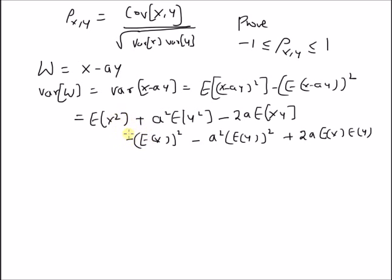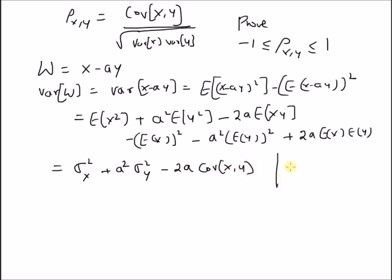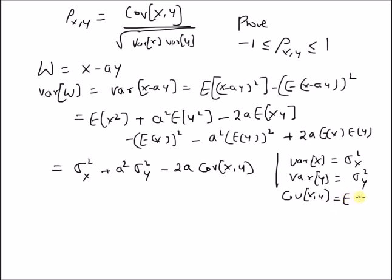Using standard notation for variance and mean, we can rewrite this: the variance of w equals sigma squared x plus a squared times sigma squared y minus two a times covariance of x and y, where variance of x equals sigma squared x, variance of y equals sigma squared y, and covariance is defined as expectation of xy minus mu x times mu y.